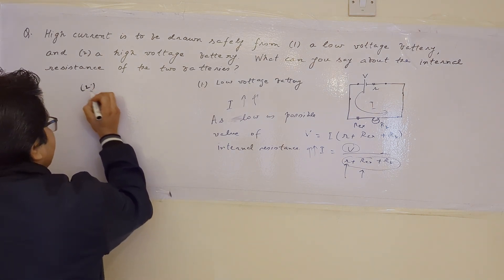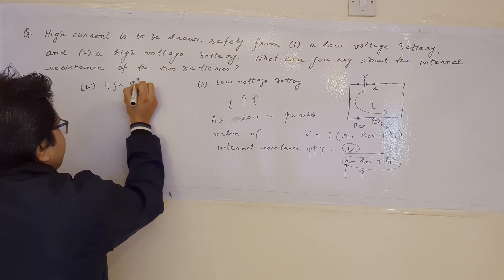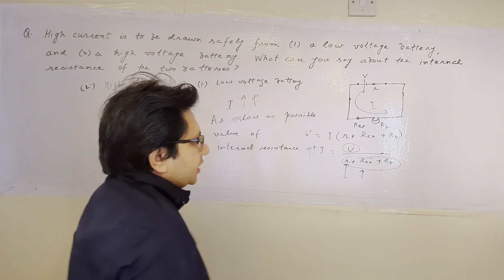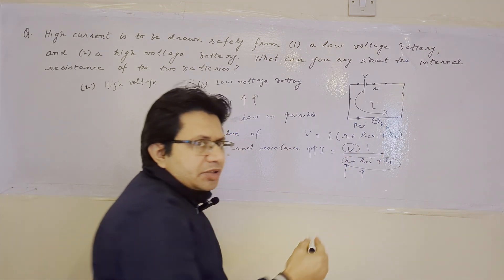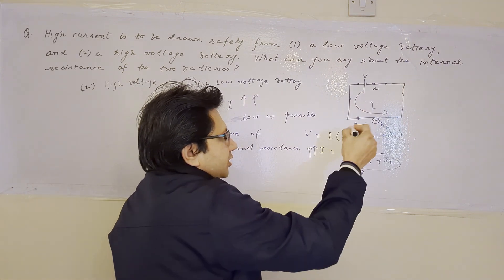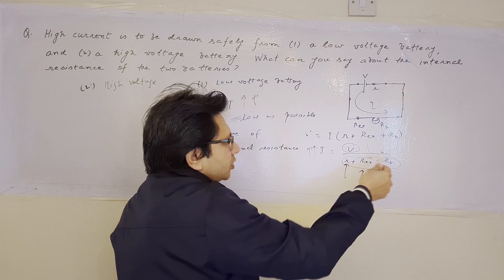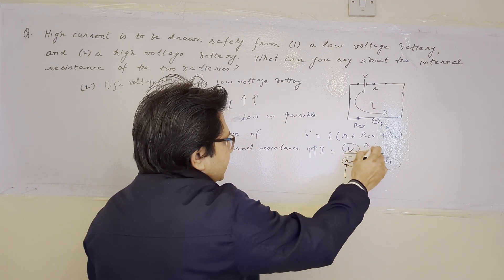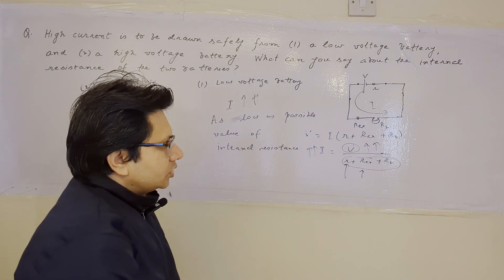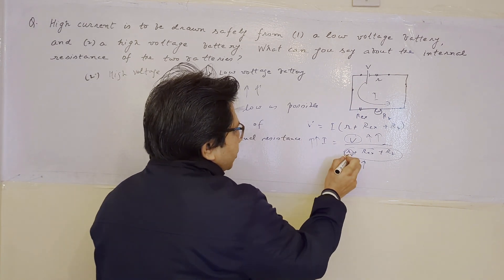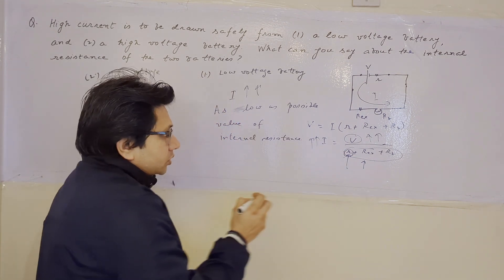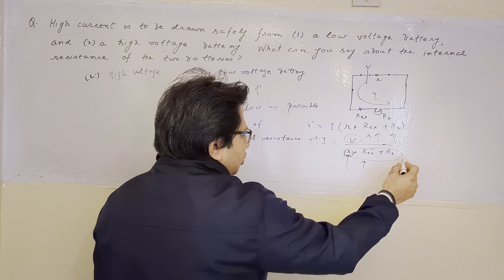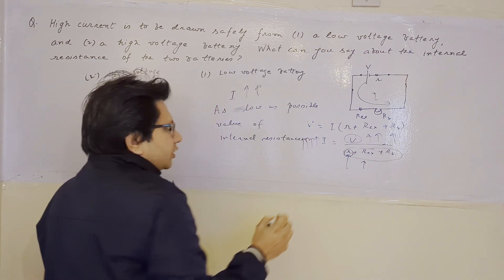In Part 2 of the problem, there is a high voltage battery. The current expression is the same — I = V / (r + R_external + R_bulb) — with the same parameters: internal resistance, voltage, and external load in series. But in this case, V is already large. When V is large, if we also make the internal resistance small, then the denominator becomes small and the current becomes very large.